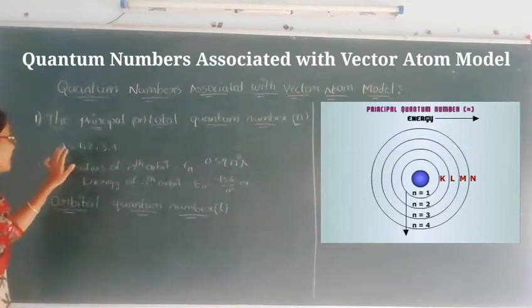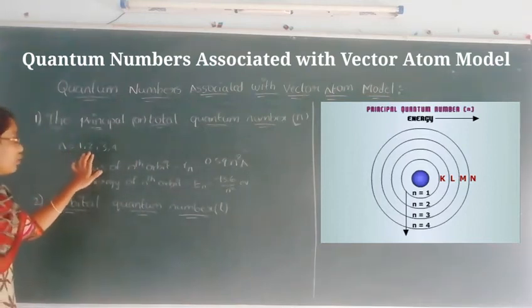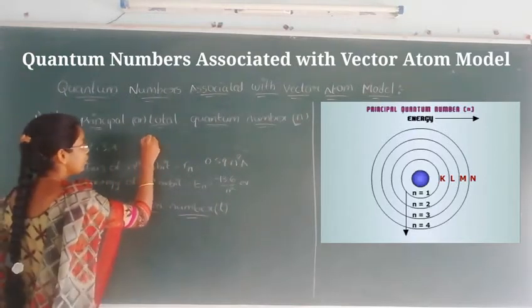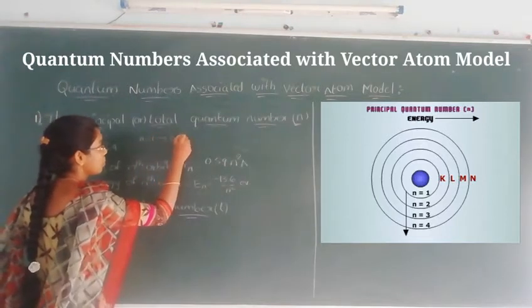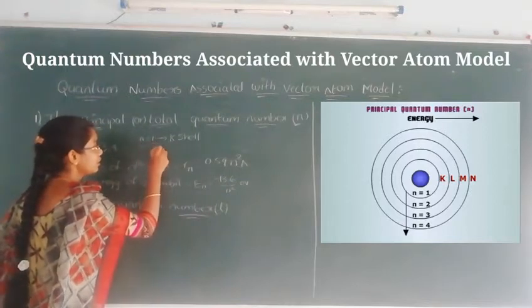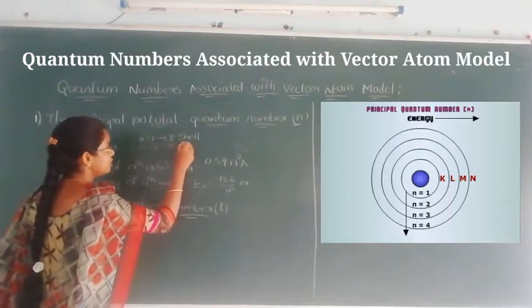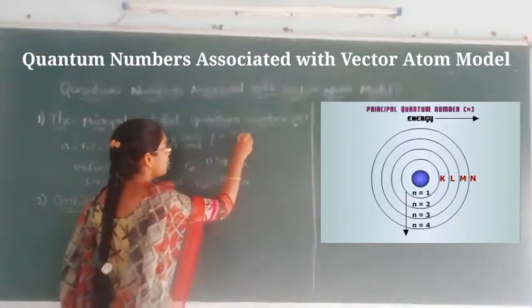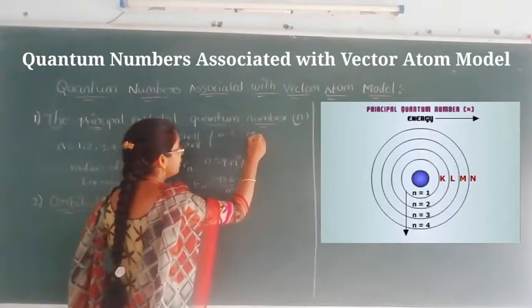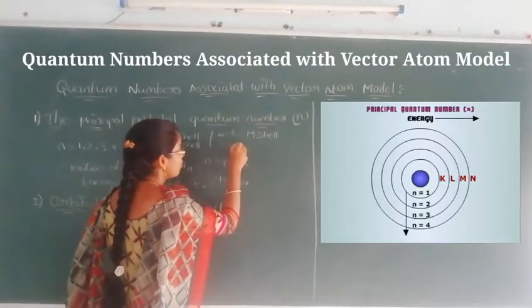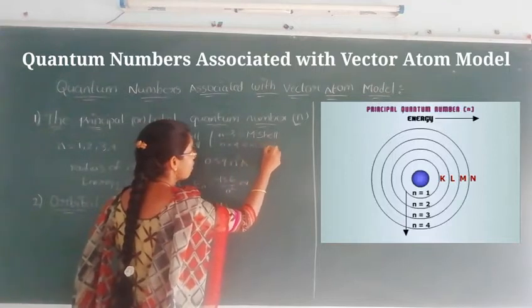For n = 1, 2, 3, and 4, the corresponding shells are denoted as follows: n = 1 is called the K shell, n = 2 is called the L shell, n = 3 is called the M shell, and n = 4 is called the N shell, and so on.